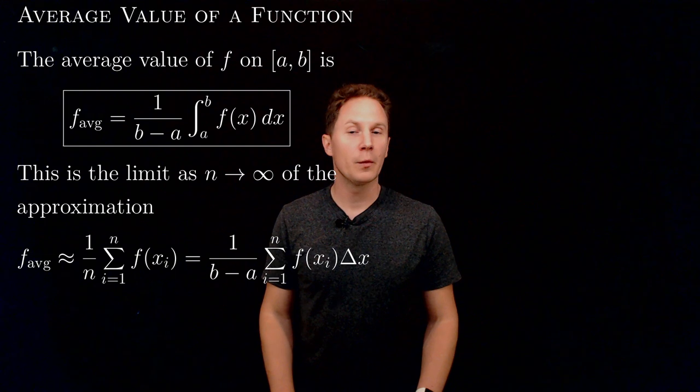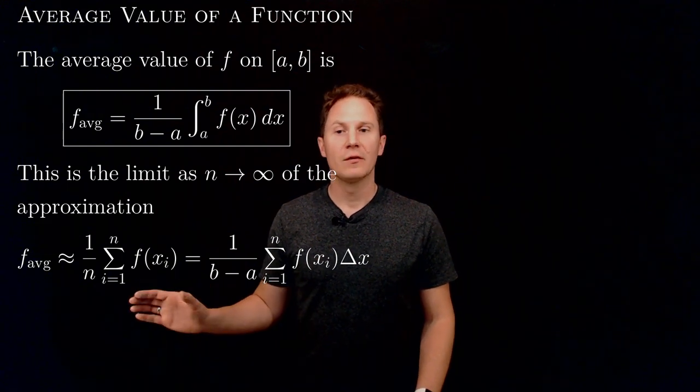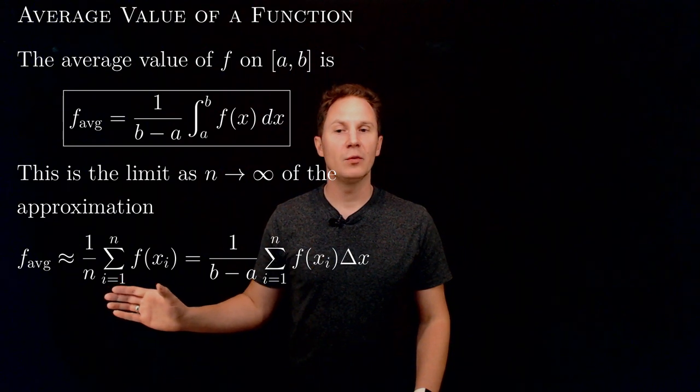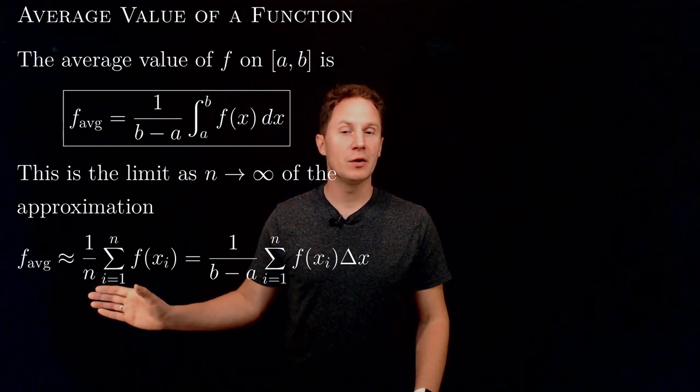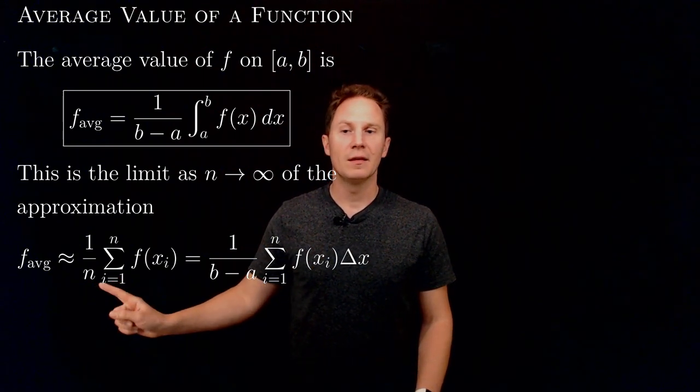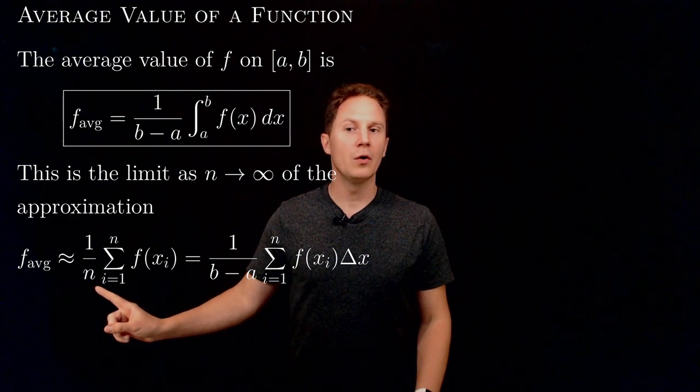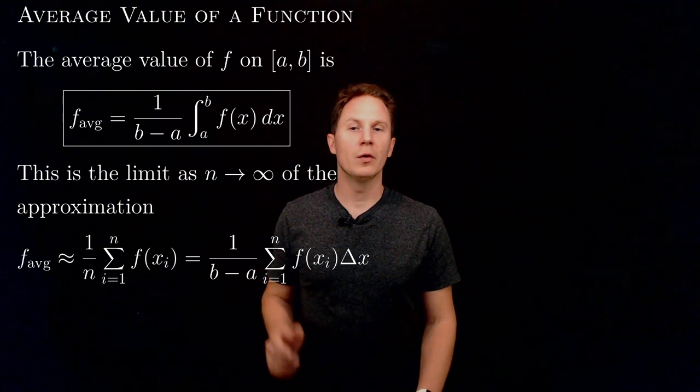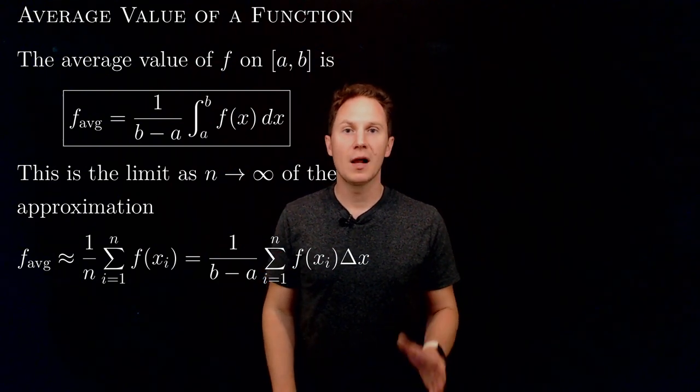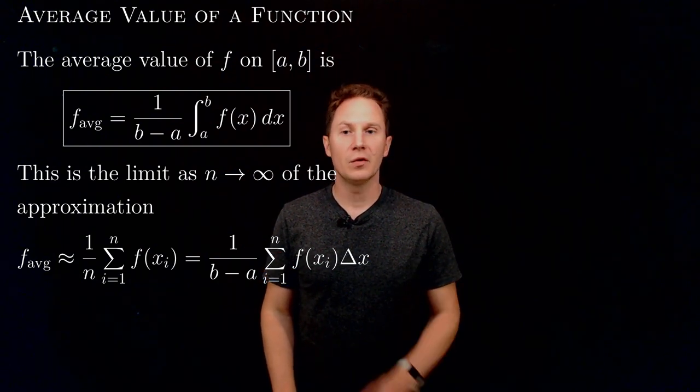This is a simple consequence of the approximation where we take some sample points at which we evaluate the function and then take the average of these values. And then all we do is write 1 over n as delta x over b minus a. Remember delta x is b minus a over n, so this is valid.